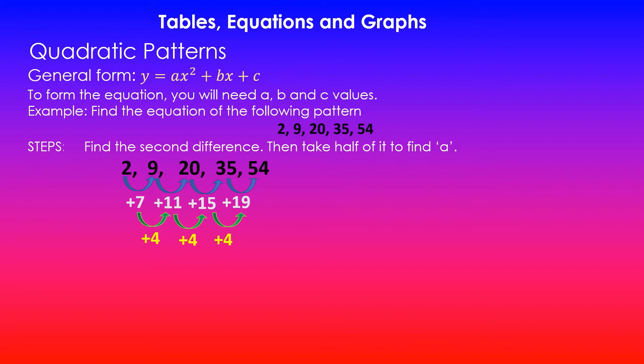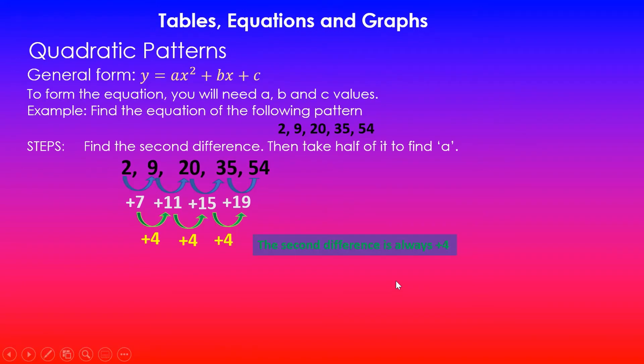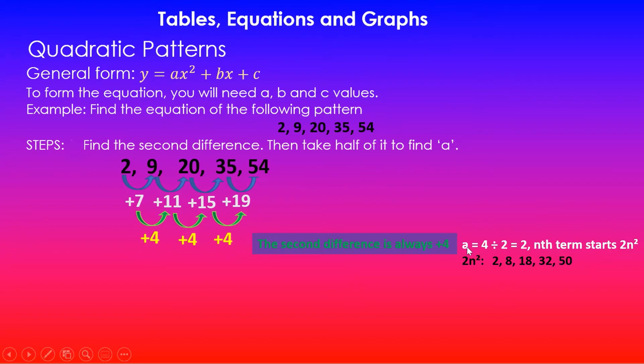In this case, the second difference is constant. It goes up by 4 each time. So from here you can see that the second difference is always plus 4. Now once I've got the second difference, if I take half of that value, I will get the a value. So a is given by 4, which is the common second difference, divide by 2. Dividing by 2 means I'm taking half of it, which gives you 2. So the nth term then will start with 2n squared.